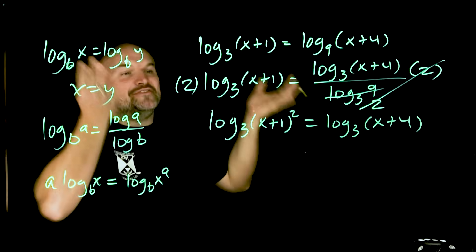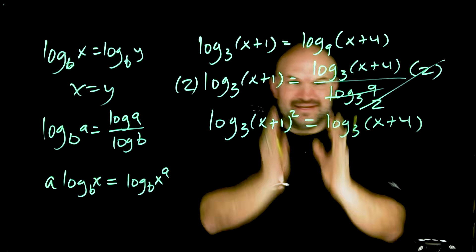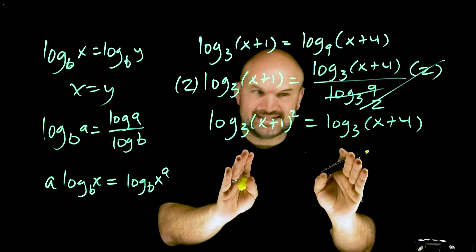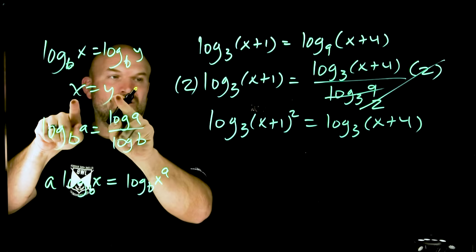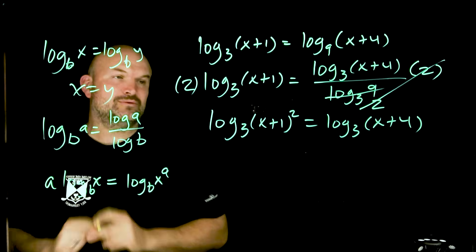Now ladies and gentlemen, finally I have a logarithm equal to a logarithm. We have the same bases. They're taking different arguments. So therefore I can simply set one argument equal to the other.